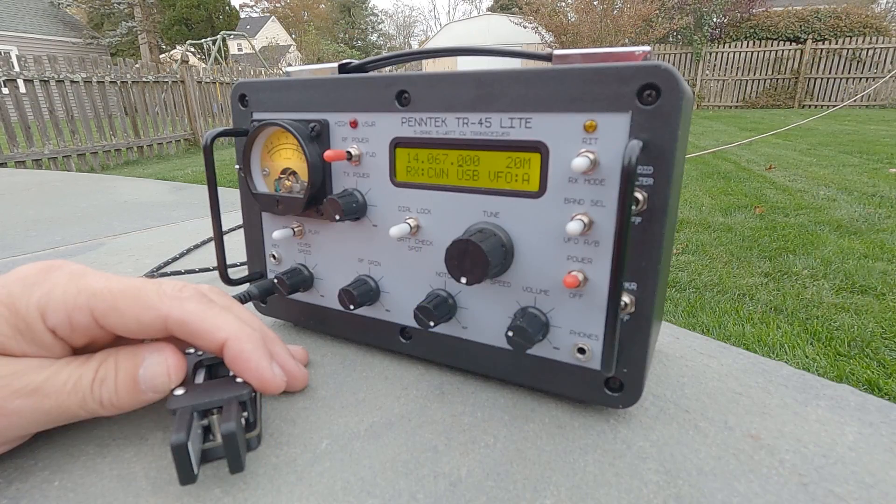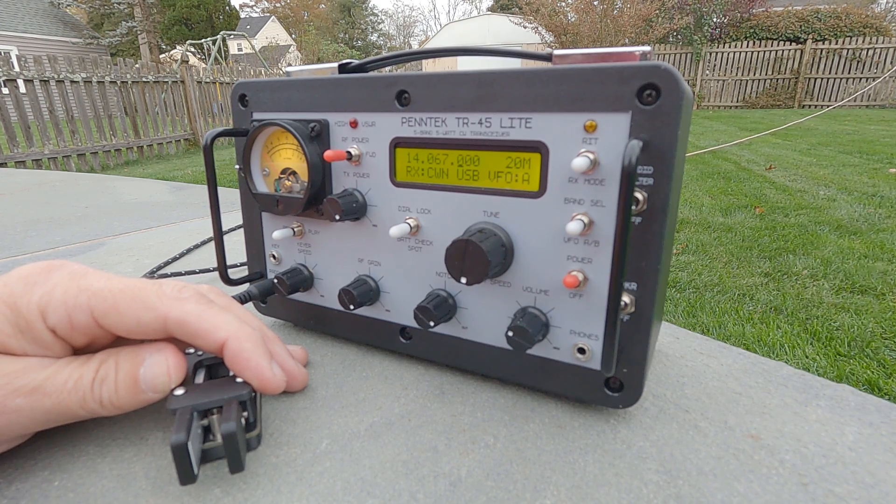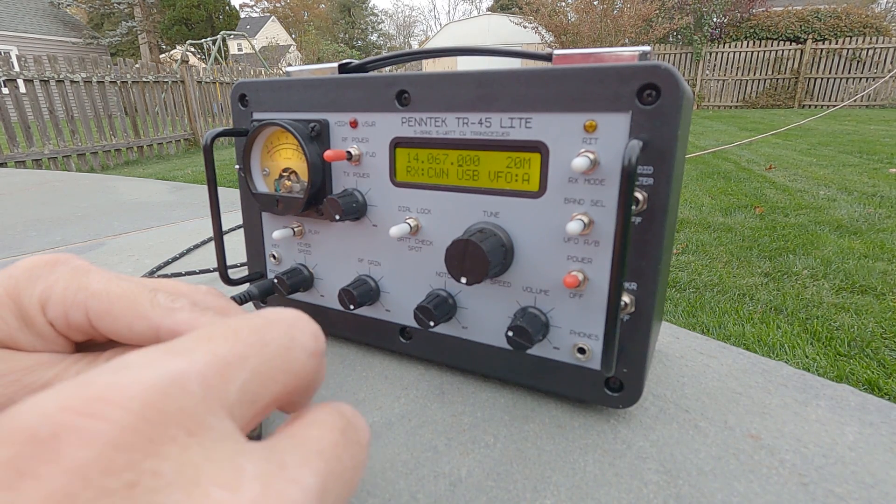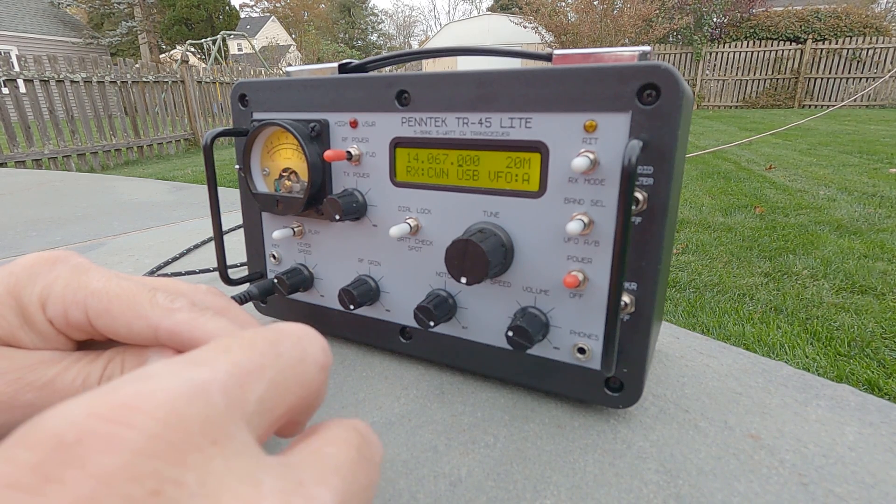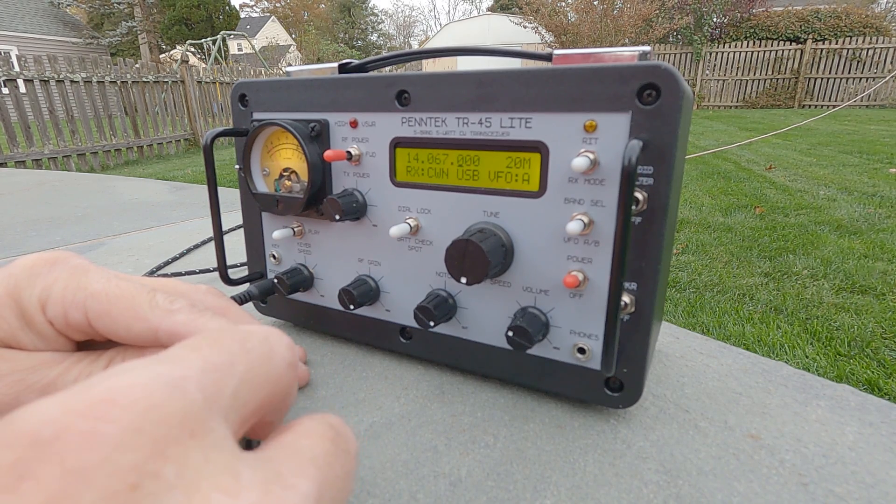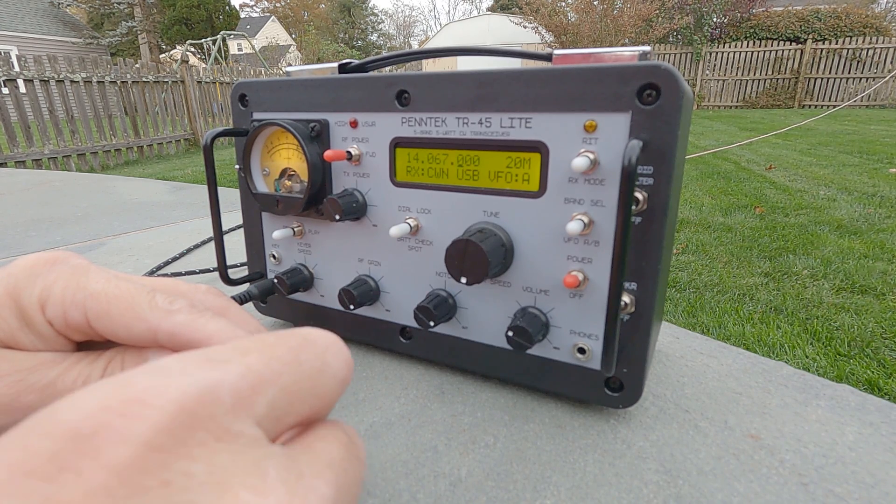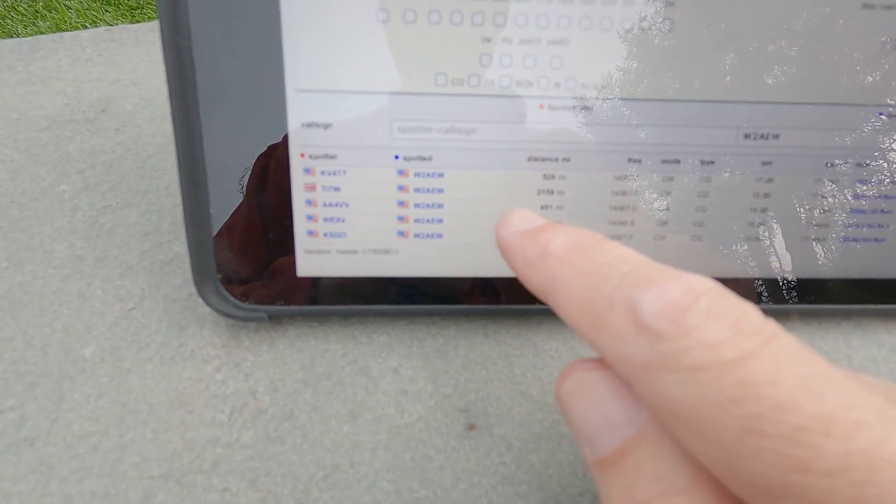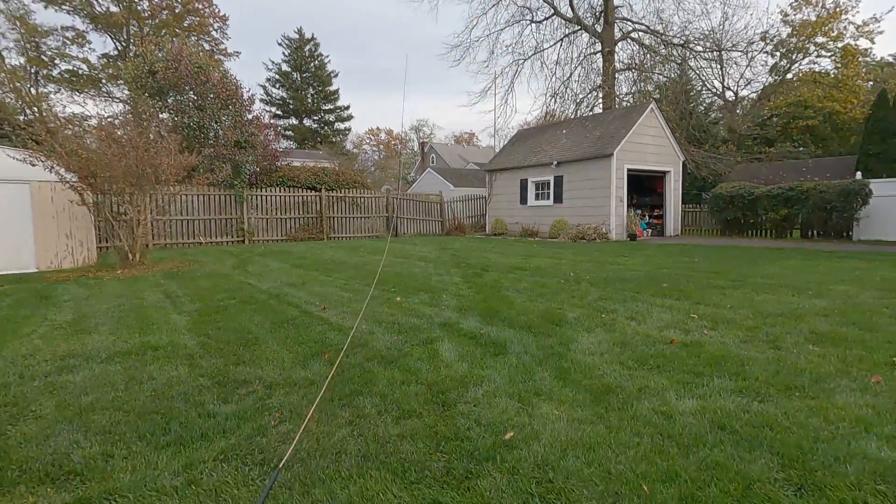As they say, proof is in the pudding. I'm gonna set up here on 20 meters, make a CQ call, and we'll check the RBN spots to see if this antenna is actually putting something out on the air. There we go, looks like we've got some contacts here. Looks like the furthest away is down in central America, a little over 2,000 miles away, not bad for probably three to four watts of power into that end fed half-wave.